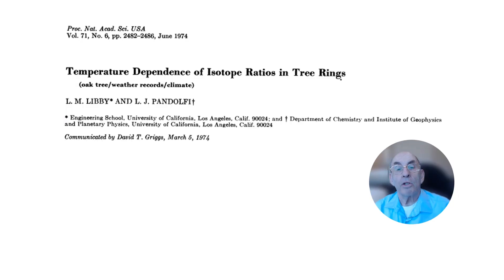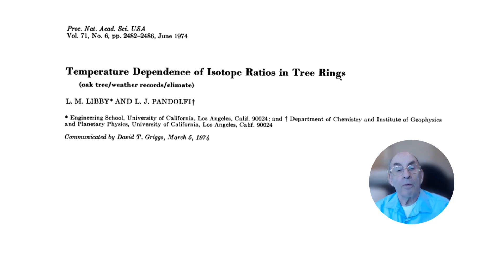A second method used to determine past temperatures from tree rings is the measurement of stable isotope ratios in the wood of the tree rings. Tree ring wood contains the elements carbon, oxygen, and hydrogen. The carbon comes from the carbon dioxide that the tree sequesters during photosynthesis. The oxygen comes from both the carbon dioxide and from the water that the tree absorbs, while the hydrogen comes only from the absorbed water.